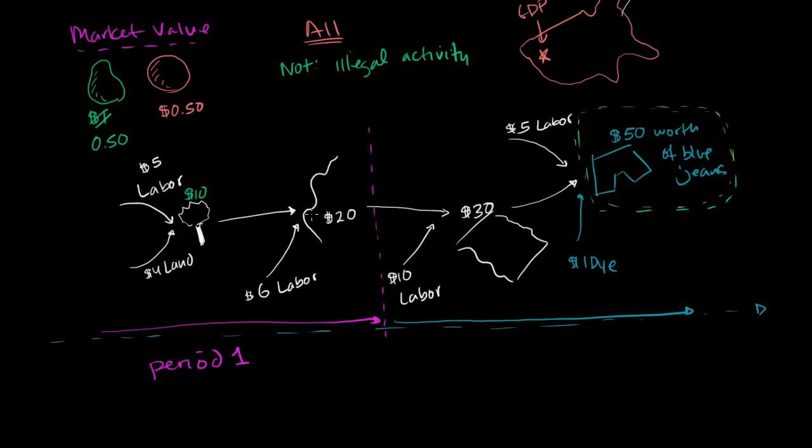So in period 1, we get to the point that we have a market value, $20 worth of thread. And then period 2, we get all the way to the jeans. So this is period 2 over here. This might be one year, and then this might be the year after that.